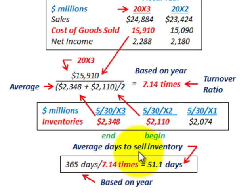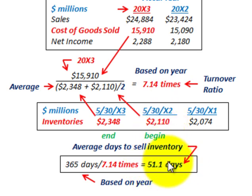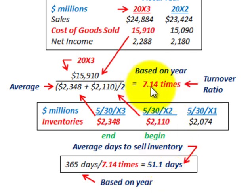Both of these ratios are very important when determining the liquidity of your inventories. Obviously you want to turn them over as many times as possible and keep the average days to a minimum. The more times you turn over inventory, the fewer days you'll hold it — and since holding inventory costs money, you want to maximize turnovers.